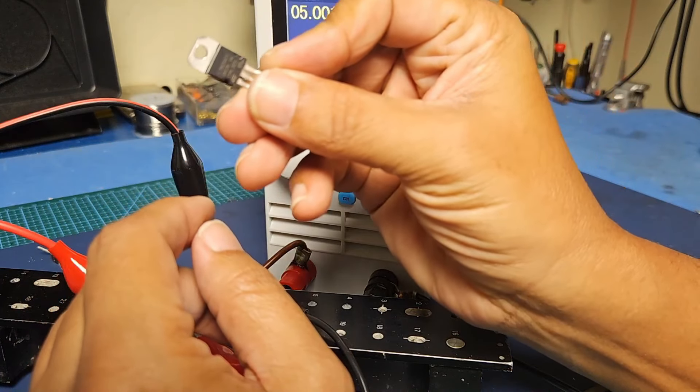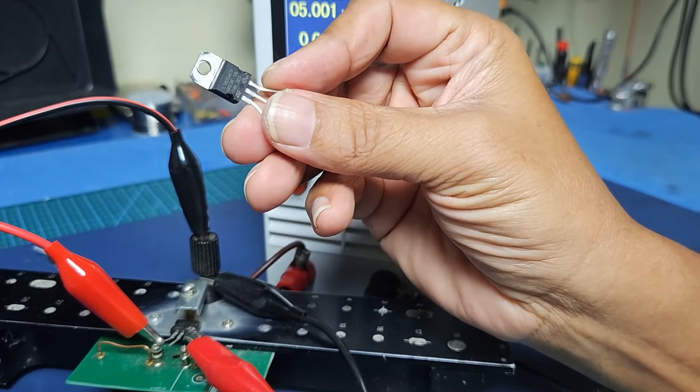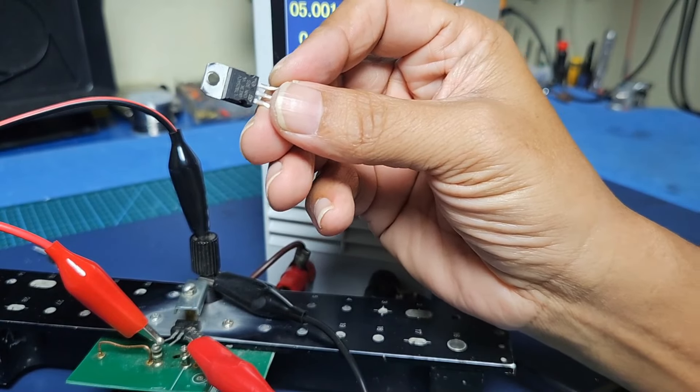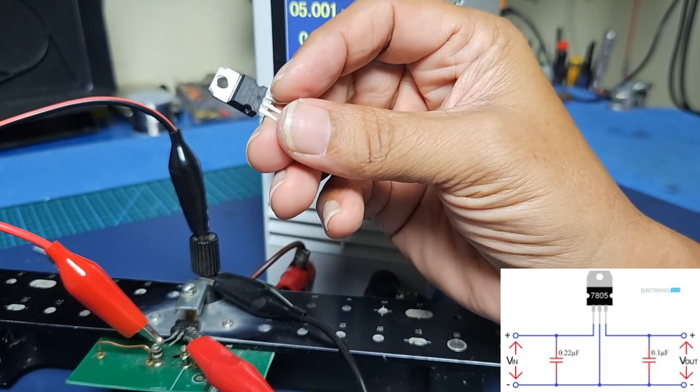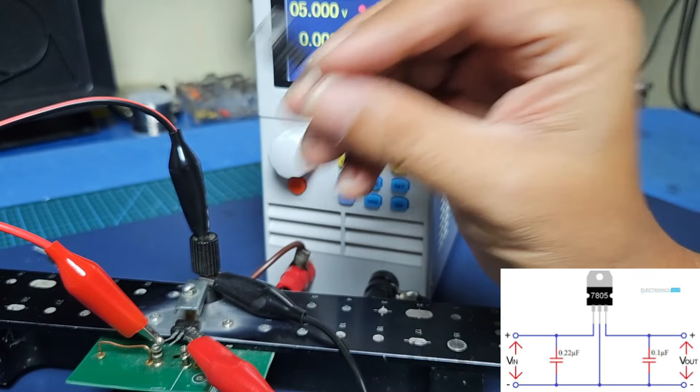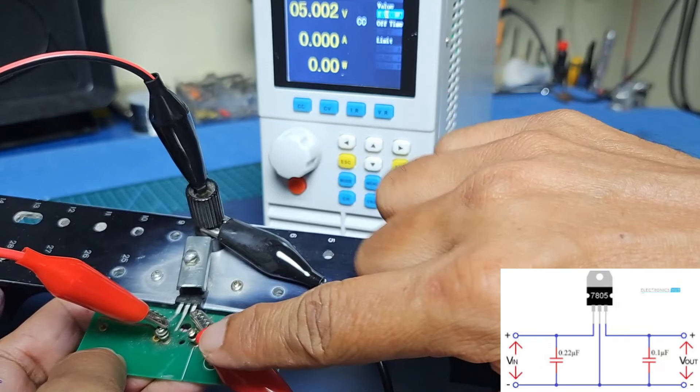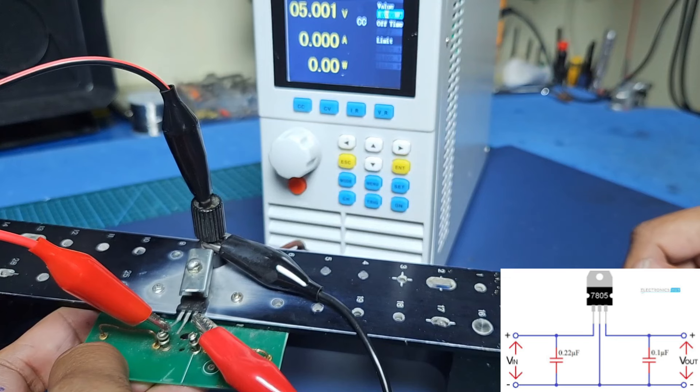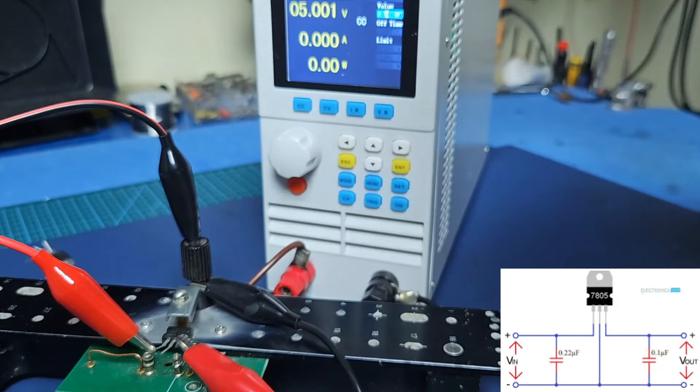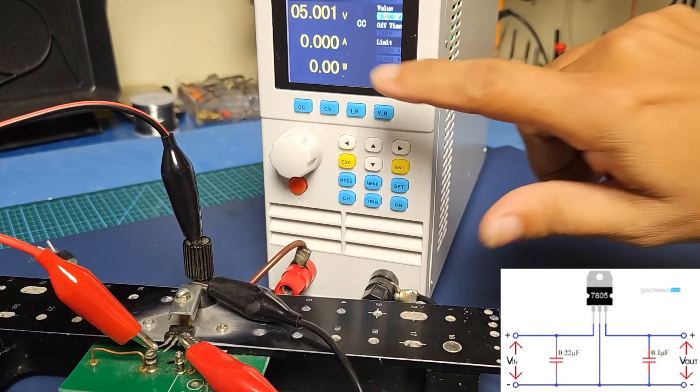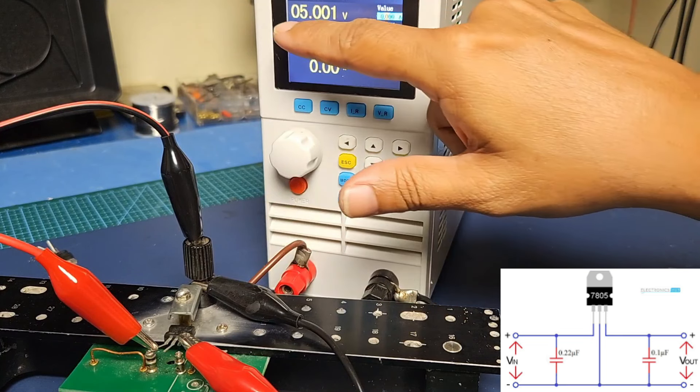Right, let's load the L7805 regulator. Now turn on the L7805 regulator to load the L7804 regulator. The output voltage is 5.001V.